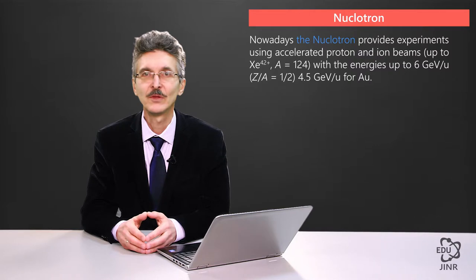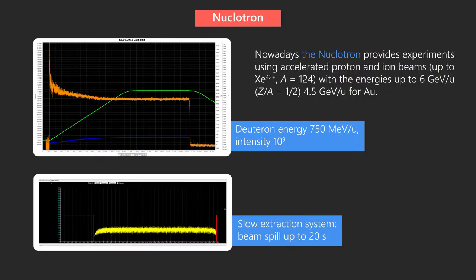Since 2000, a slow extraction system has been operating at the nucleotron. The diagram in the slide below depicts the structure of slow extraction. The duration of an extraction can amount up to 20 seconds. The quality of the extracted beam is fully satisfactory, which is enough for physicists.